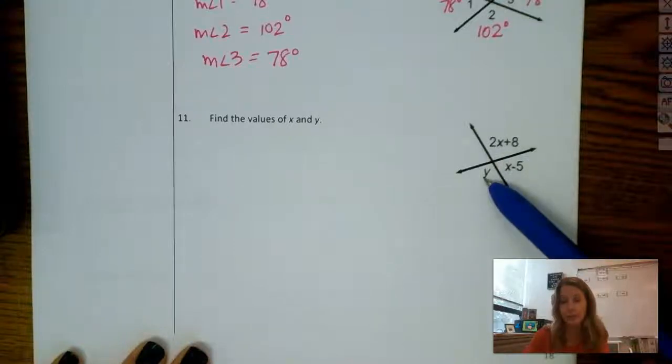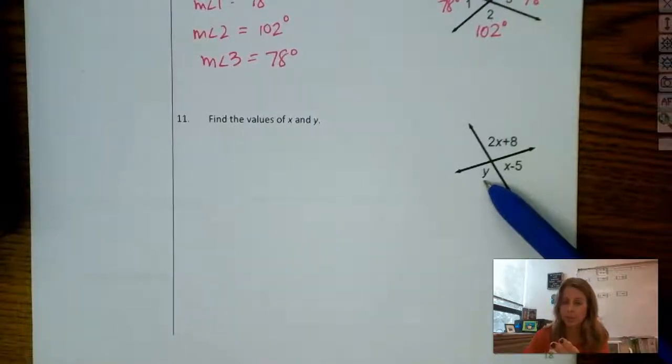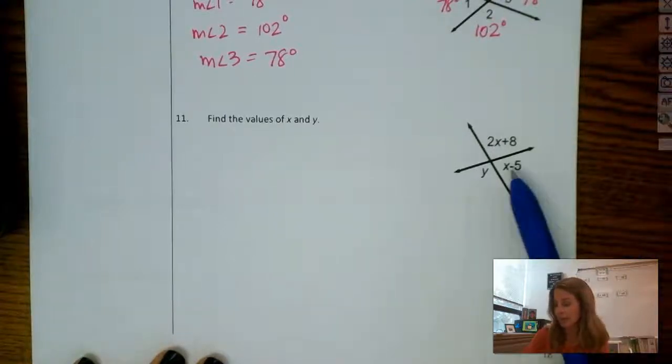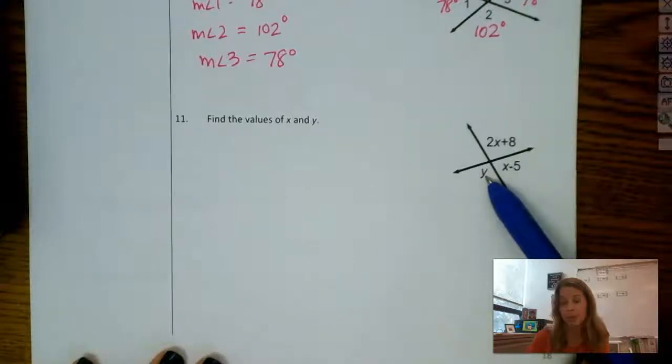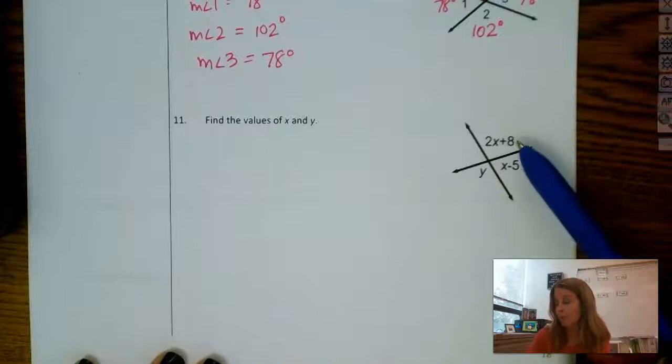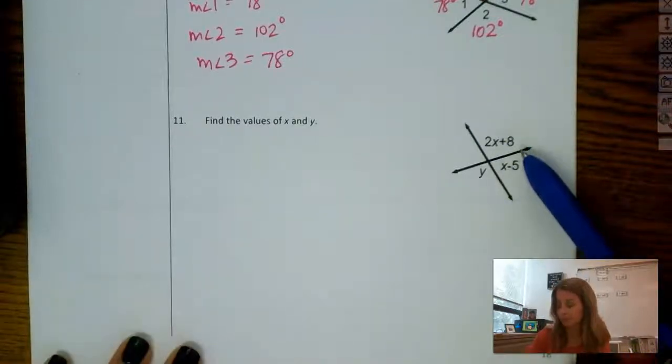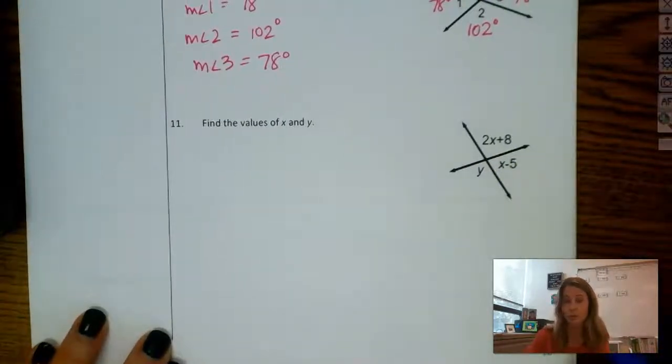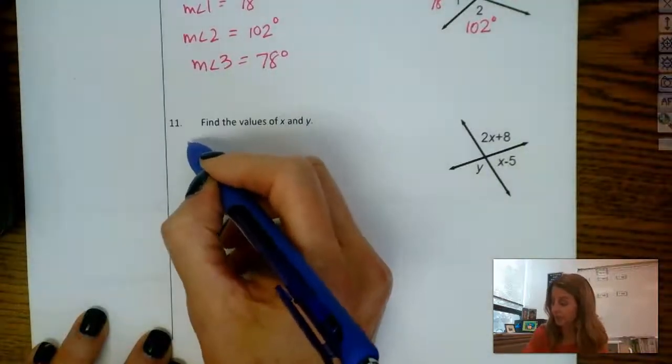So I see a set of vertical angles, so I can see that 2x plus 8 is equal to y. I could write that down and use that, but I have x and y in one equation, so that means I need a second equation to solve, which I could set up. I also have a linear pair here, and I have a second linear pair here. So this linear pair would, if I were to add y to x minus 5, set it equal to 180, that would be another x and y equation. So I could solve a system with those two. But if you look at this linear pair, see how they both only contain one variable. So I'm probably going to do this one first. So 2x plus 8 and x minus 5 are a linear pair, so linear pairs are supplementary. So let's work with that one.